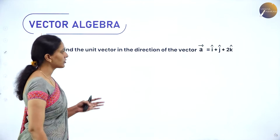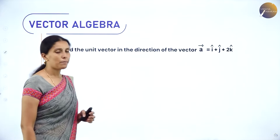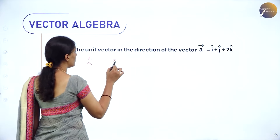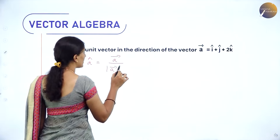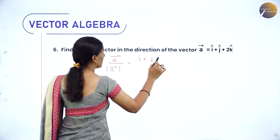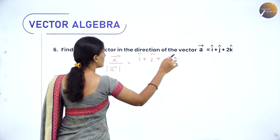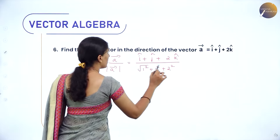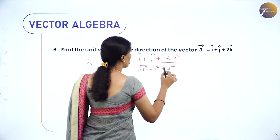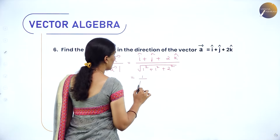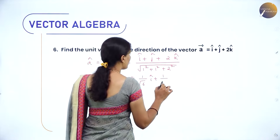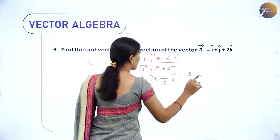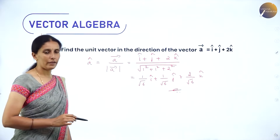Example: Find the unit vector in the direction of vector a = î+ĵ+2k̂. â = a/|a| = (î+ĵ+2k̂)/√(1²+1²+2²) = (î+ĵ+2k̂)/√6. So â = (1/√6)î + (1/√6)ĵ + (2/√6)k̂. This is the unit vector along the direction of the given vector.